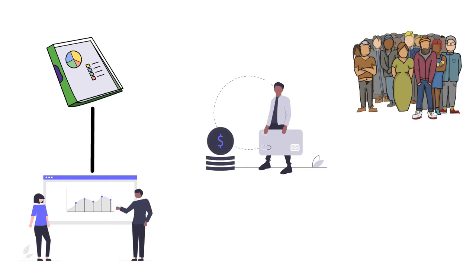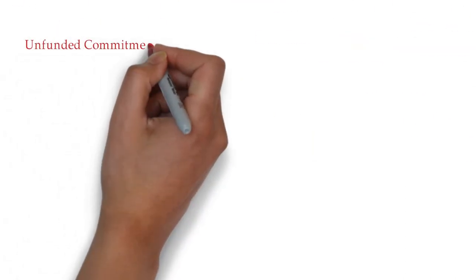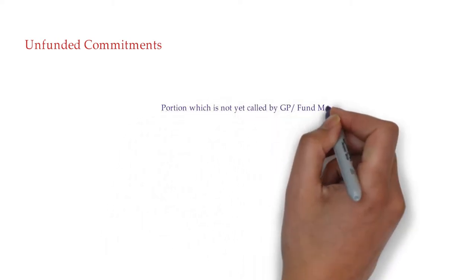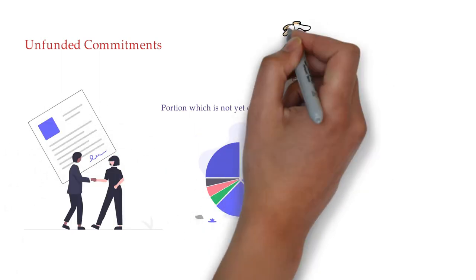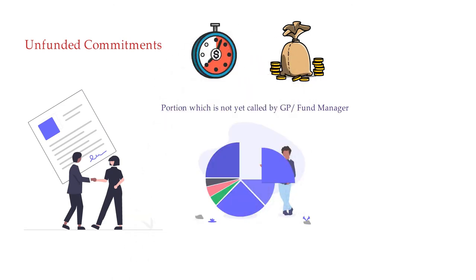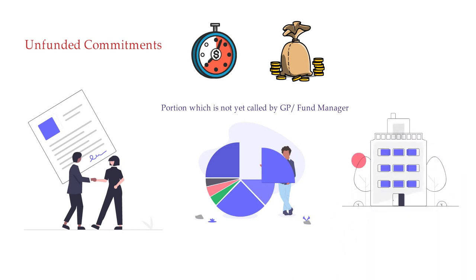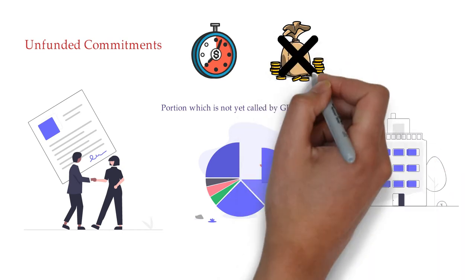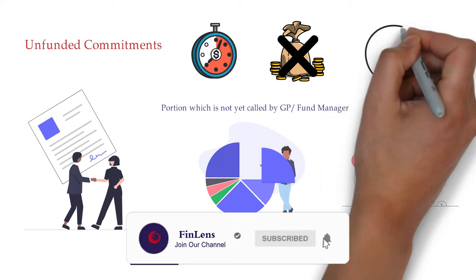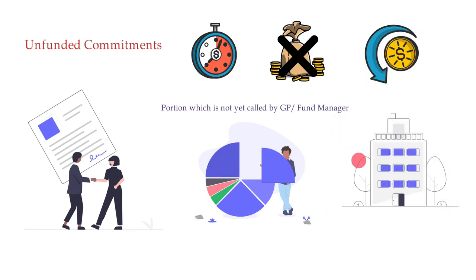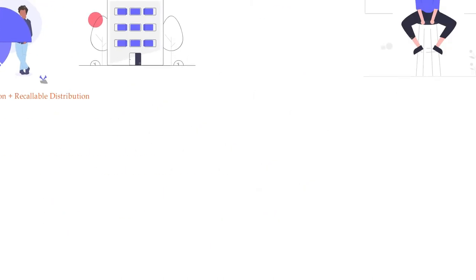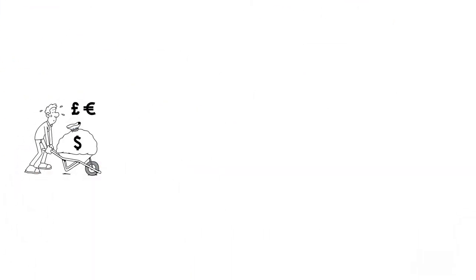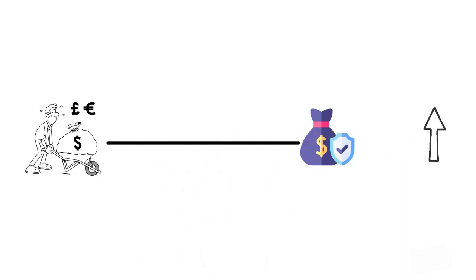Now let's understand unfunded commitment. Unfunded commitment is the portion of commitment which is not called by the fund manager. An investor's commitment to a private equity fund is drawn over time. If a PE firm can't find suitable investment opportunities, it will not draw on an investor's commitment, and an investor may potentially invest less than expected or committed. The basic formula to calculate unfunded commitment is: total commitment minus contribution plus any recallable distributions. Recallable distributions are the portion of distributions that can be recalled in the future, so they increase the unfunded commitment.